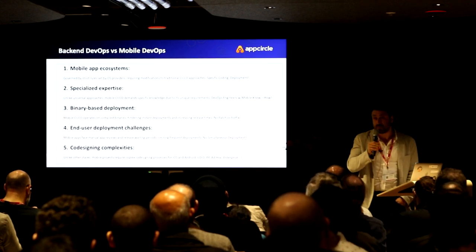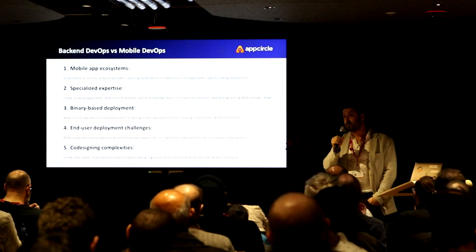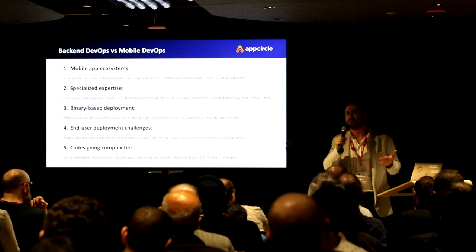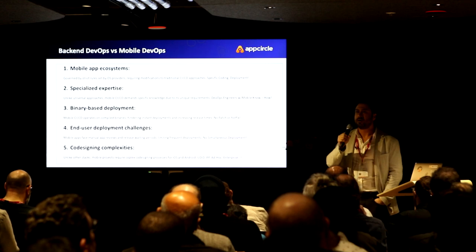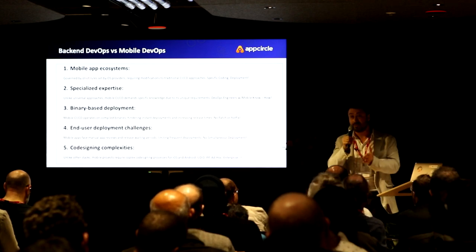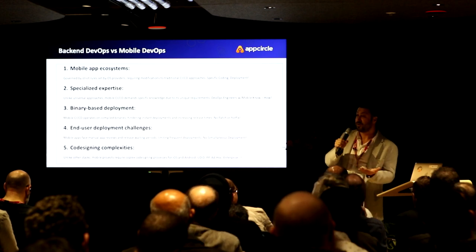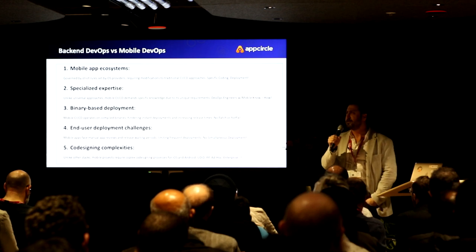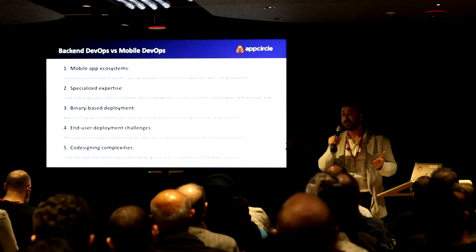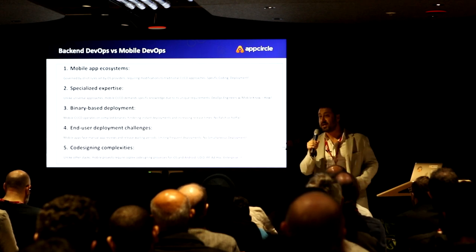And the code signing complexities — you have to sign your code every single time when you get a release. It is still more complicated than the standard DevOps process because, especially in the iOS environment, there are different types of distribution — development distribution, ad hoc distribution, enterprise distribution, and different distribution methodologies. For every single one of them you have to use another type of certificate. And in the iOS world there is another thing called the provisioning profile. So there are a lot of different concepts and challenges, and you have to follow every single thing in iOS or Android in order to manage this CI/CD process.